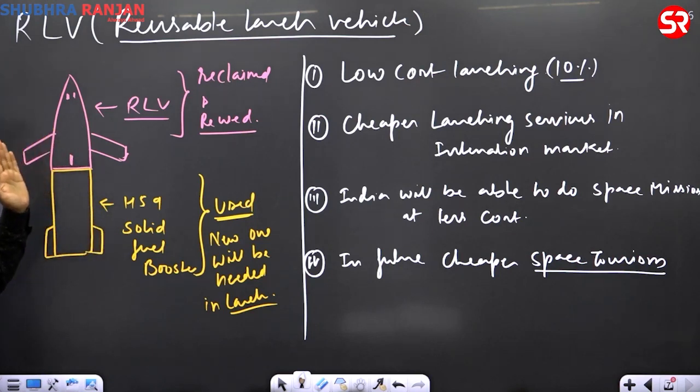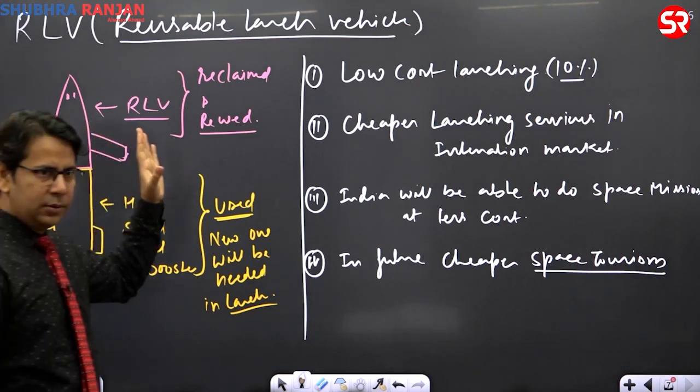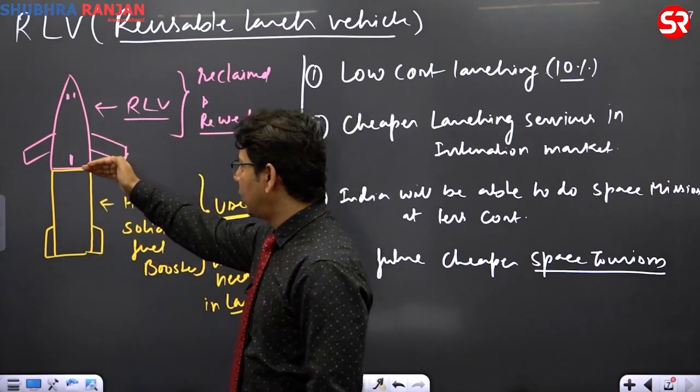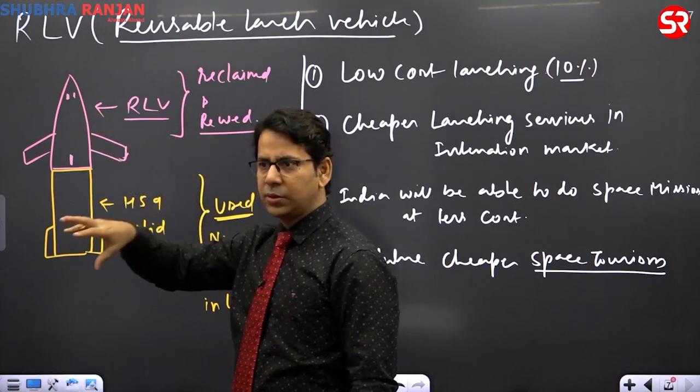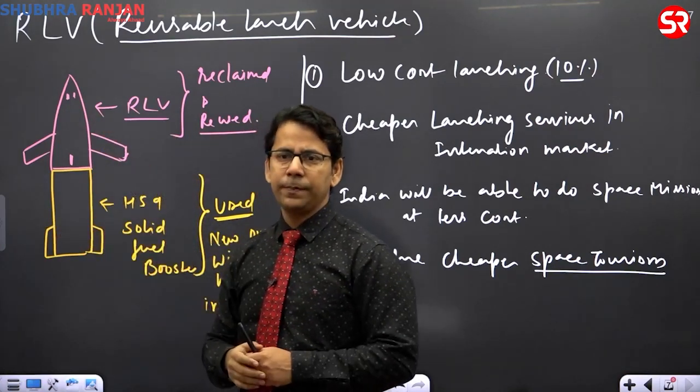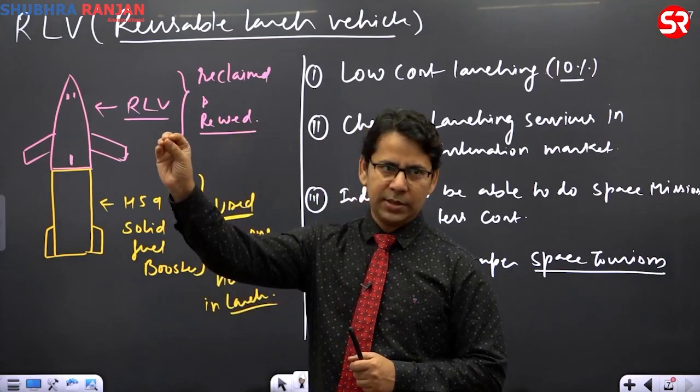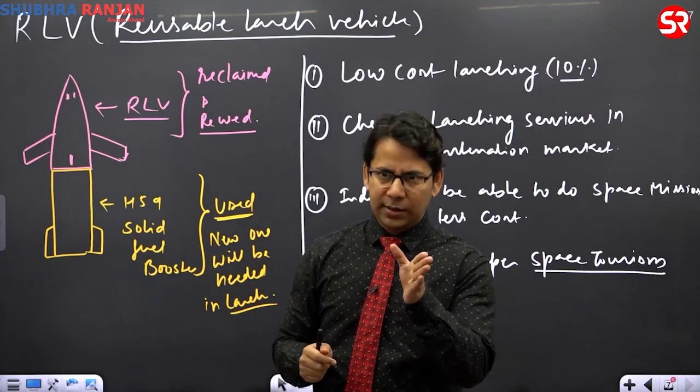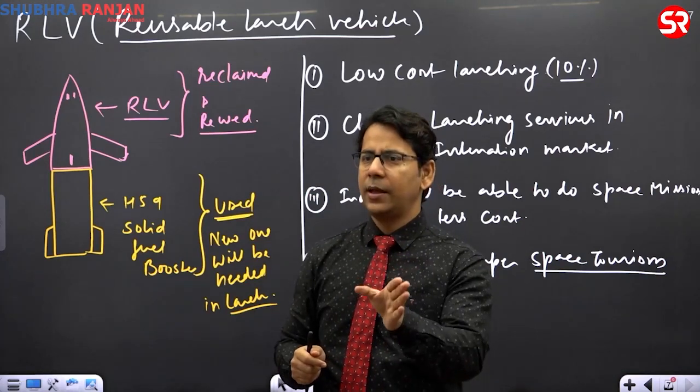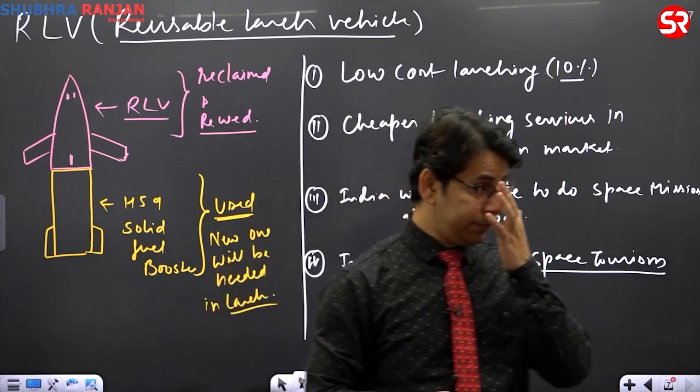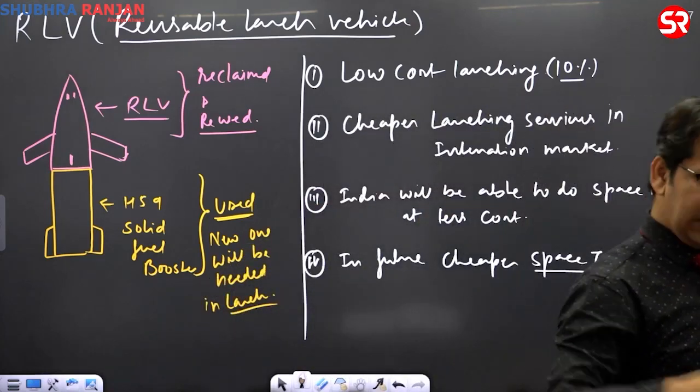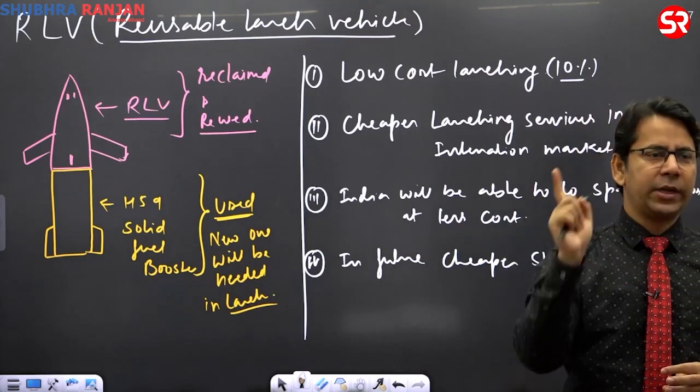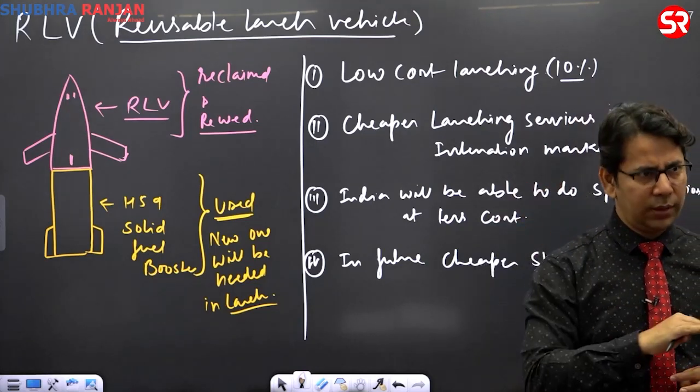And this will be launching like a rocket. Booster will take this RLV to the space. Booster will separate. RLV will, using its own technology, own engine, launch the satellite onto the orbit. It will make a comeback, enter into the earth's atmosphere, and land like aircraft. Launching will be vertical, landing will be horizontal.